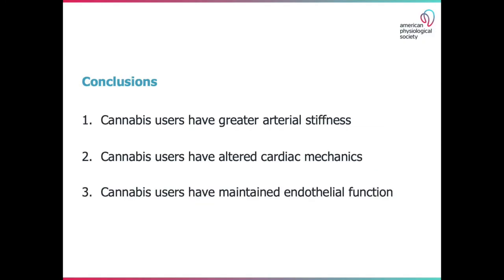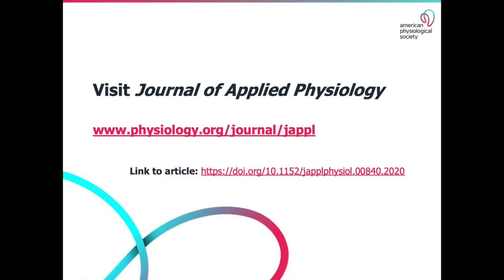To summarize our study, we found that cannabis users had greater arterial stiffness and altered cardiac mechanics, but similar endothelial function compared to non-users. This concludes our video abstract. If you've enjoyed this abstract, we encourage you to read our full publication, which can be accessed on the American Physiological Society's website.